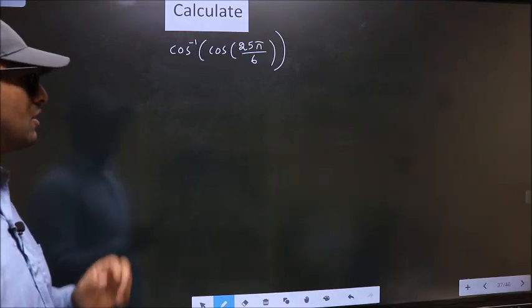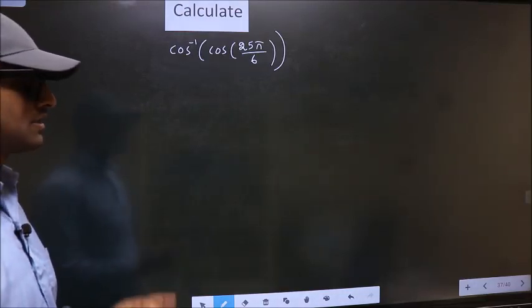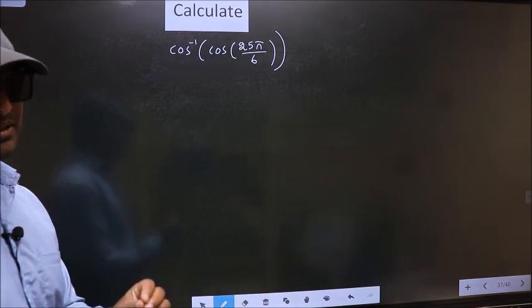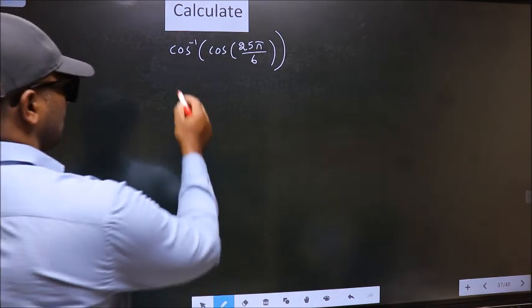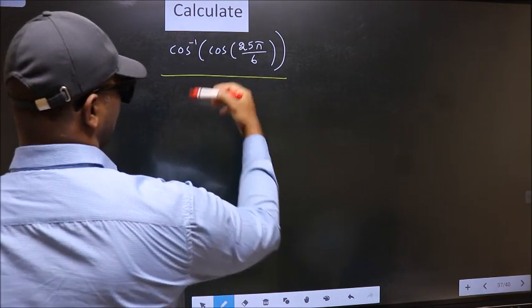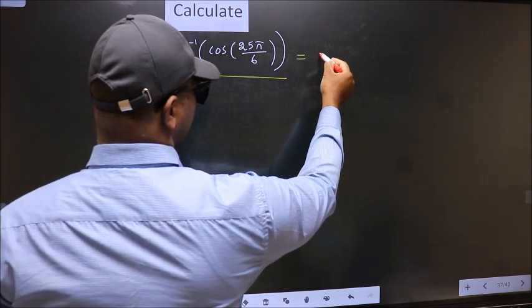Calculate cos inverse cos 25 pi by 6. How do we calculate this? We should get the answer to this one. So let us take the answer to be y.